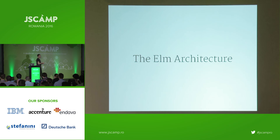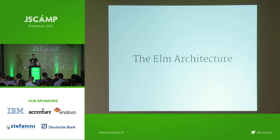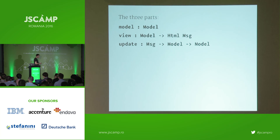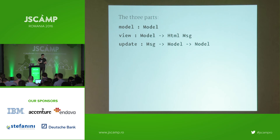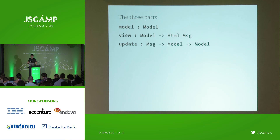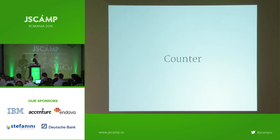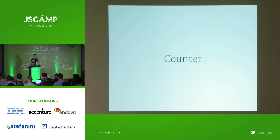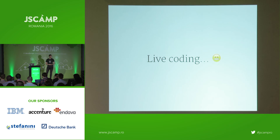The Elm architecture has three parts: a model — which returns a type Model containing all the data in your application; a view function — which takes a model and returns some HTML; and an update function — which takes a message and a model and returns your new model. To demonstrate, the hello world of Elm architecture is a counter application — a number with buttons to increment and decrement. About 20 minutes ago when I saw Tim doing live coding, I thought I should as well. Let's attempt this live on stage.